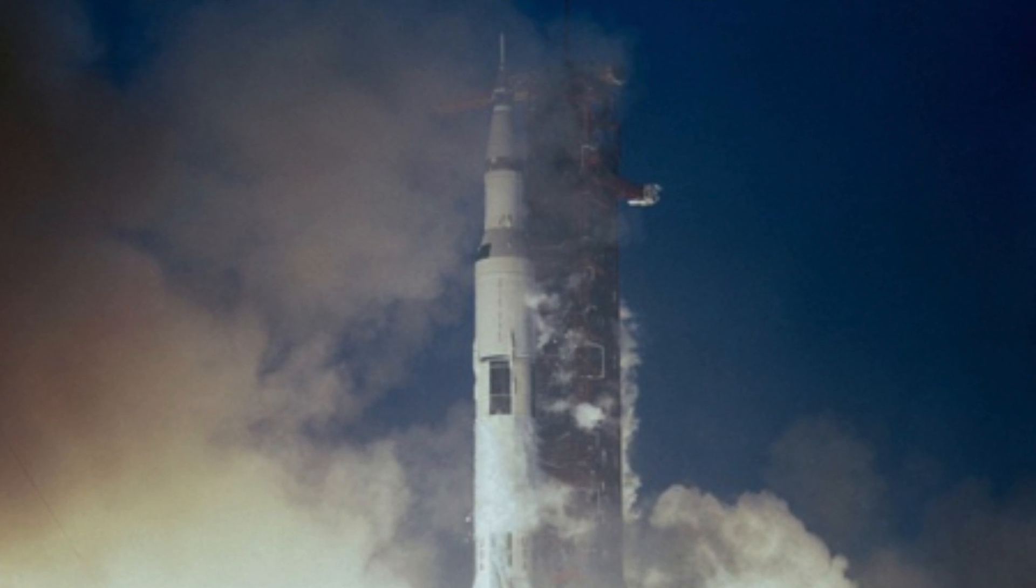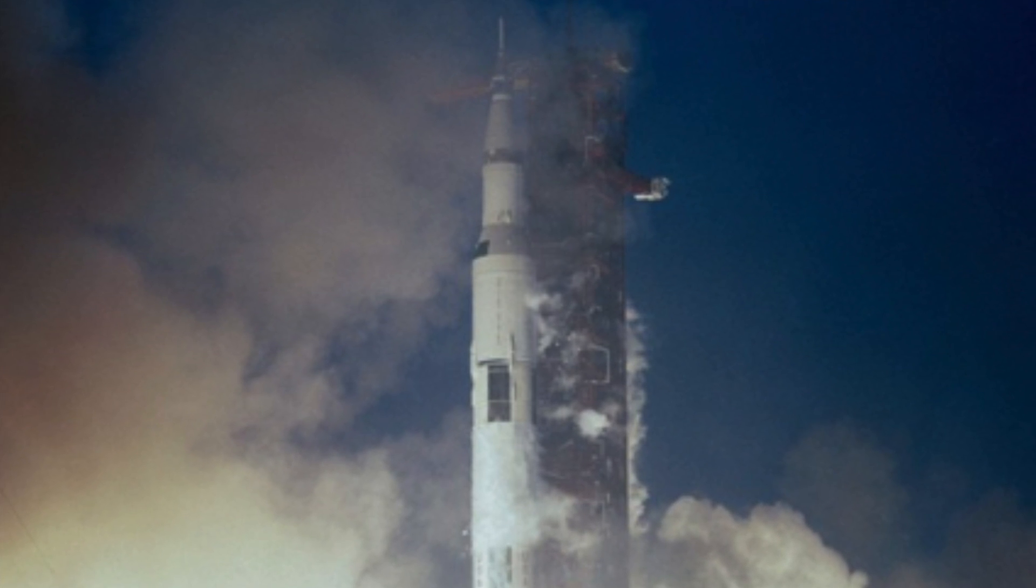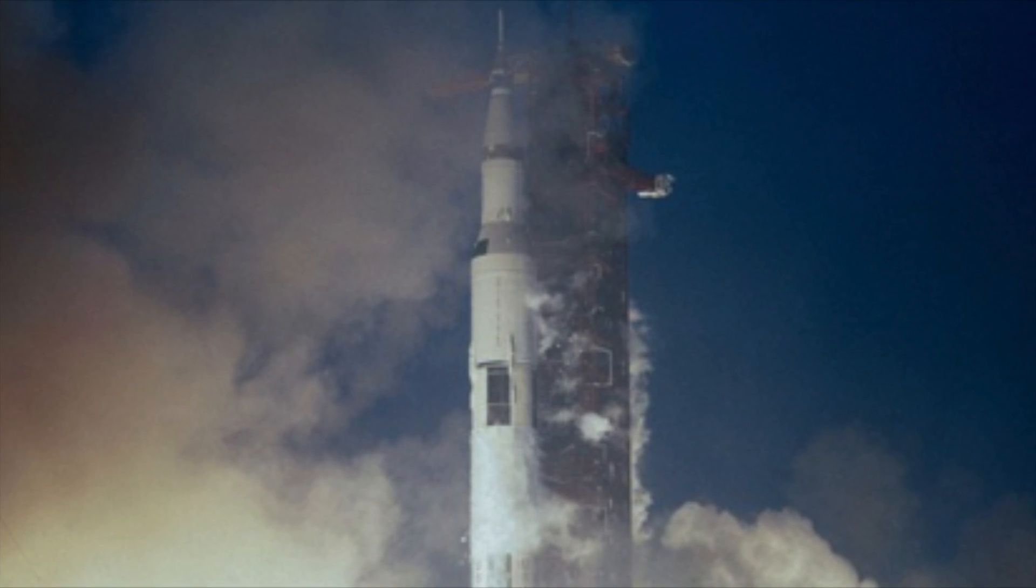Once data was gathered on 1991 VG, Scottie realized this was the second time the unidentified object had passed Earth. The first was March of 1975. Asteroids don't tend to survive long enough, or remain on the same orbit, to pass Earth in the same spot twice.